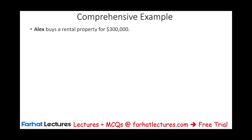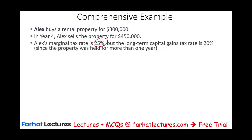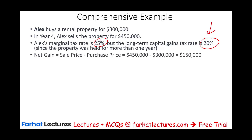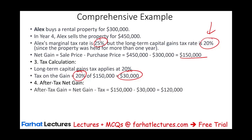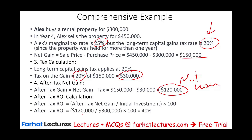In a comprehensive example: Alex buys a rental property for $300,000 and sells it four years later for $450,000. His marginal tax rate is 25%, but the long-term capital gains tax rate is 20%, which applies here. The net gain is $150,000 (450,000 − 300,000). Taxes on the gain: 20% × $150,000 = $30,000. After-tax net gain is $120,000. The after-tax ROI is 120,000 / 300,000 = 40% — but this is over four years.